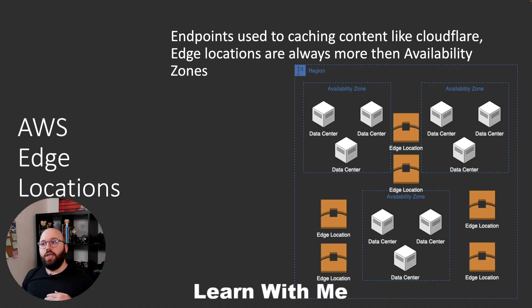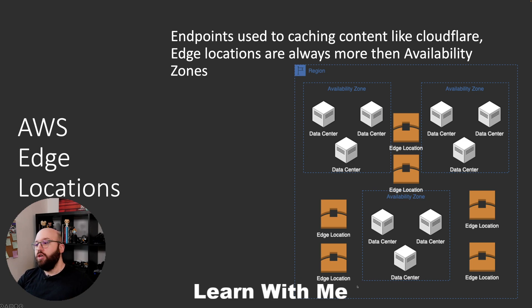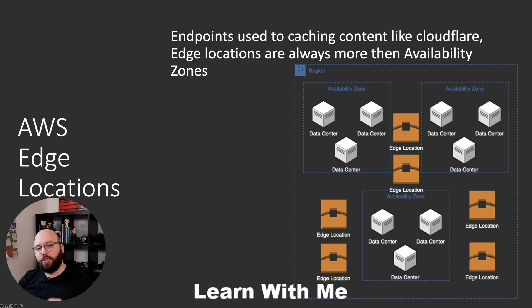The next item is edge locations. Edge locations are used for caching our services. We're not going into full detail now — we'll cover caching in future videos — but for now, know the term CloudFront, which is the AWS service that provides caching. All AWS edge locations provide this caching functionality. A key rule of thumb: there are always more edge locations than availability zones. Edge locations allow us to cache our information closer to users.